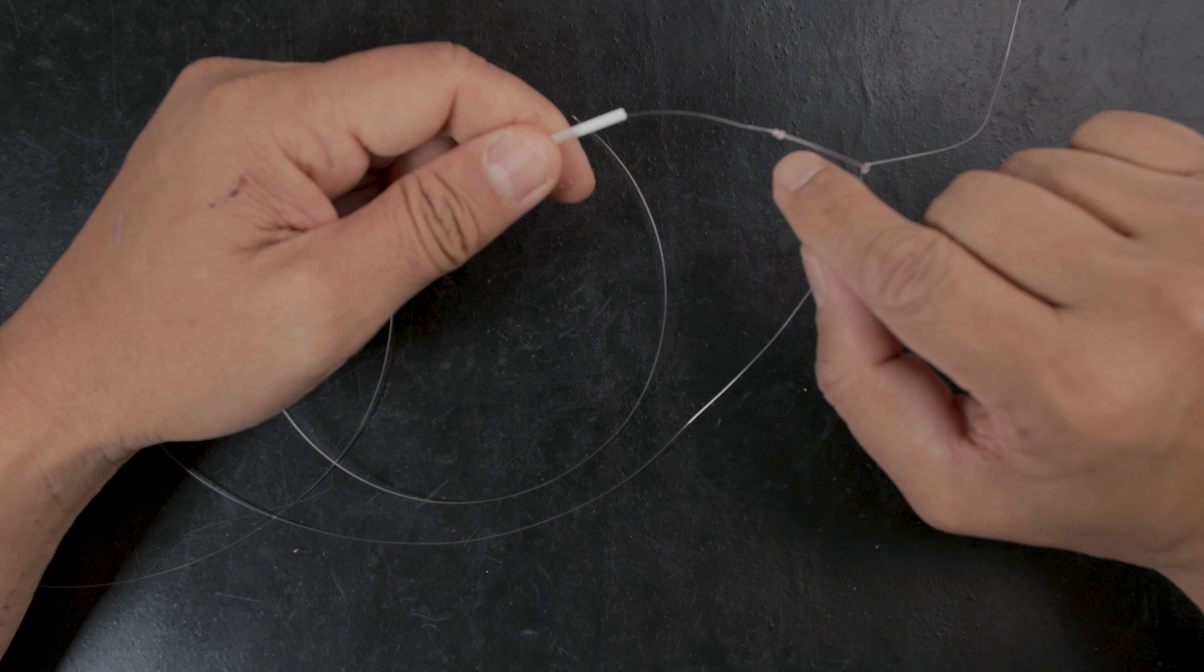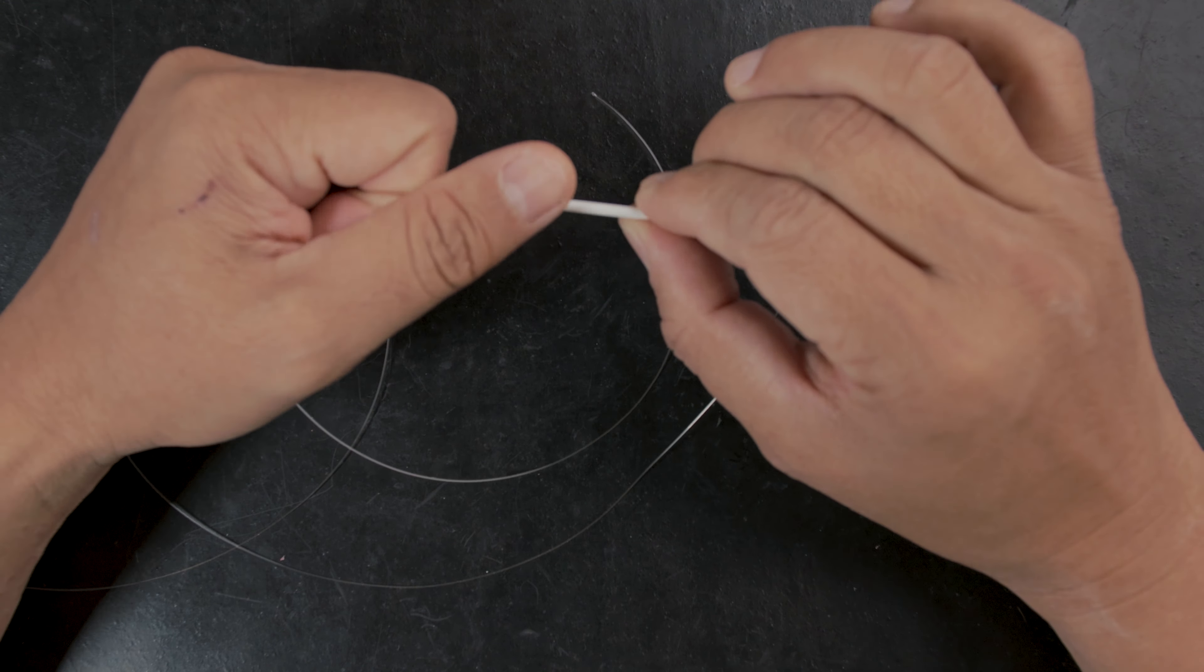You have that knot right there that actually snags the Q-tip shaft so that it doesn't move. And what that does is put separation and hang the hook that you're gonna put on here away from the line so it doesn't tangle.